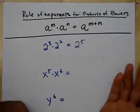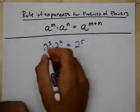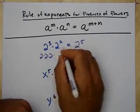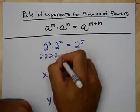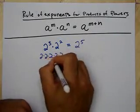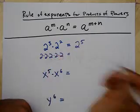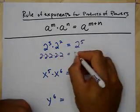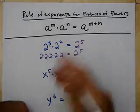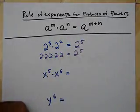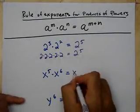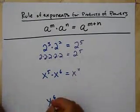Well, it's pretty obvious why. 2 to the 3rd is 2 times 2 times 2. 2 squared is 2 times 2. Well, 2 times 2 times 2 times 2 times 2 is 2 to the 5th. So when in doubt, write it out. x to the 5th times x to the 6th is x to the 11th.